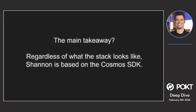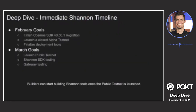The main takeaway regardless of what the stack looks like is that Shannon is being built fully Cosmos SDK compatible. The protocol team is working out this migration issue — figuring out whether to continue with Roll Kit, go to a different rollup middleware, or be an L1 where everything's handled through the Pocket token. Converting from a Roll Kit-based product on Celestia to just being an L1 is actually a very straightforward process because everything is already built utilizing the Cosmos SDK.